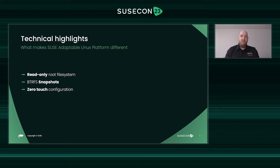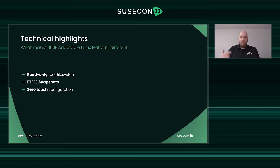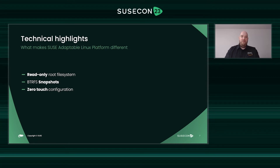How is that actually achieved? ALP boots into a separate snapshot, and changing something on the operating system means actually booting into a new snapshot. And then you have zero-touch configuration, which basically means if you don't want to touch the operating system manually, you don't have to. There are a lot of different tools like Ignition, Combustion, Afterburn, Ansible, and Salt to do the whole operating system configuration, either at boot time or later during operation.